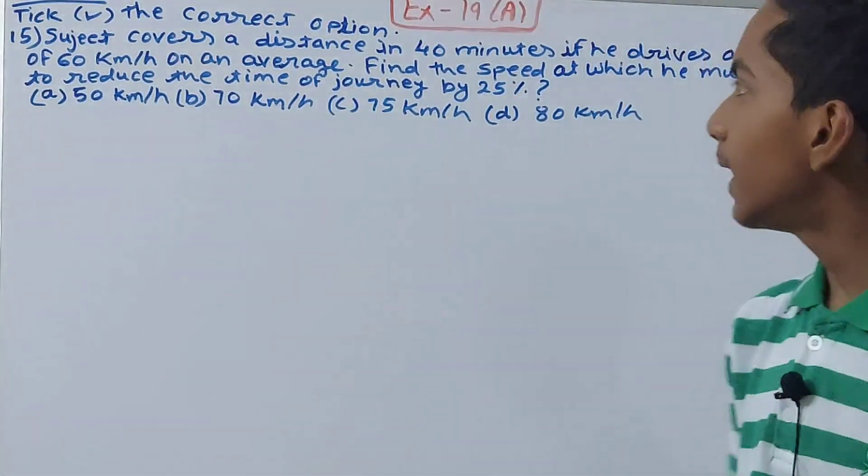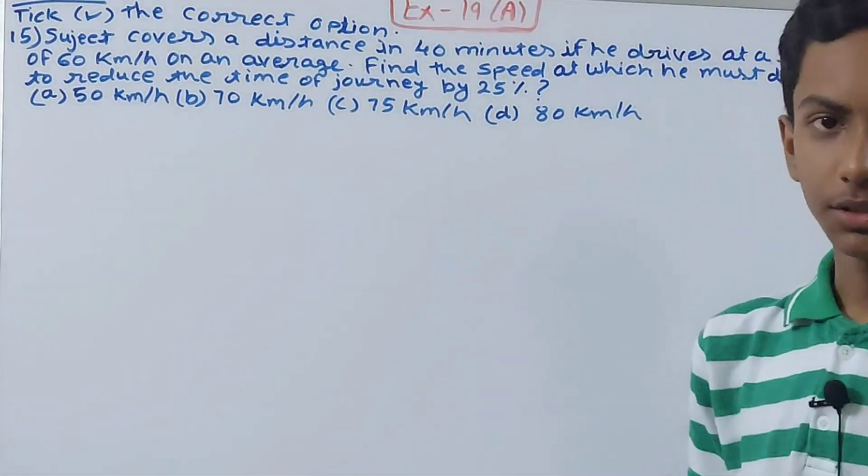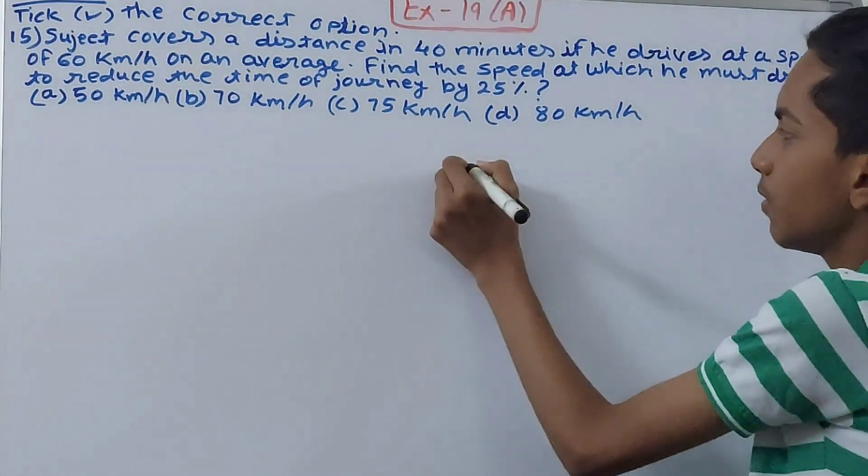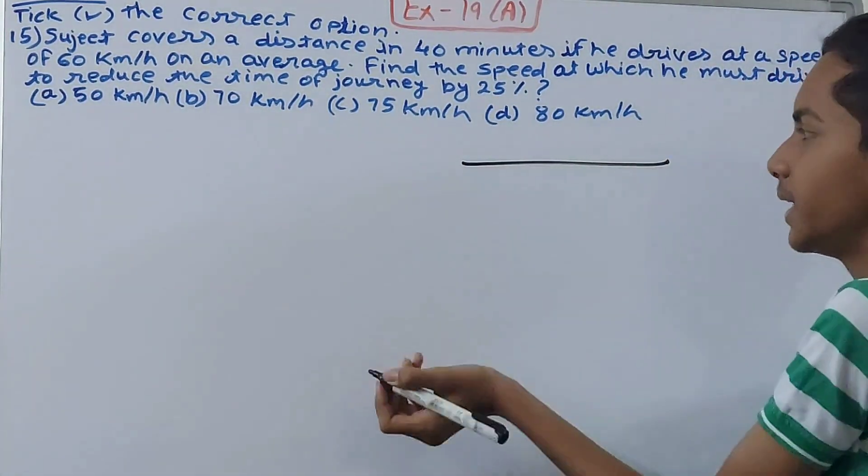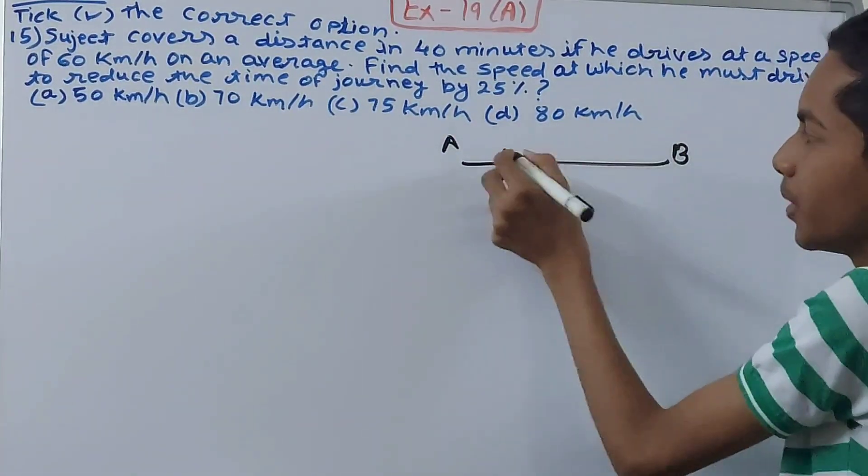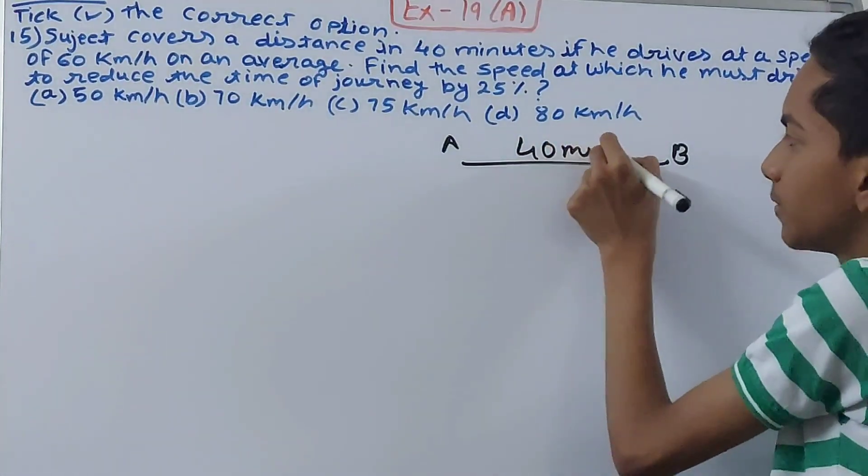Here there is a boy Sujit and he covers a certain distance in 40 minutes. Suppose he is going from here all the way to here, A to B. The time that he takes to go from here to here is 40 minutes.